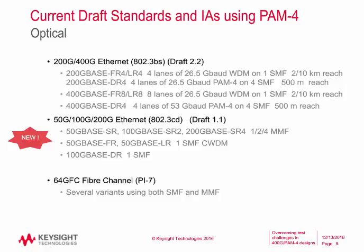The Ethernet community recognized the need for a 50 gig lane definition, so 802.3CD was created. It covers 50 gig, 100 gig, and 200 gig on multimode fiber as well as single mode fiber and WDM. 100G Base-DR is one lane of single mode fiber. 64 gig Fibre Channel is also going to be leveraging PAM4, and will leverage a lot of the work taking place in 802.3BS and CD.